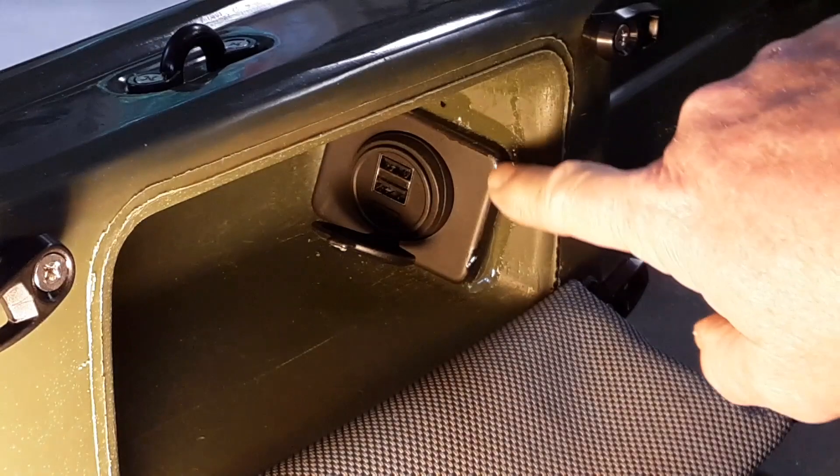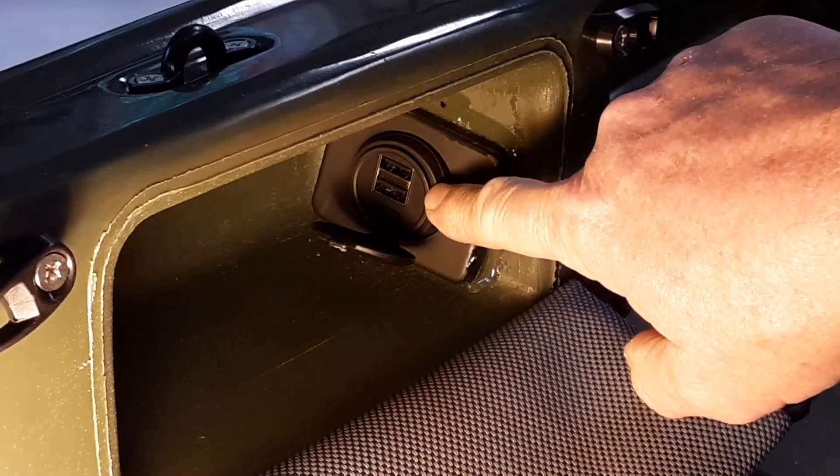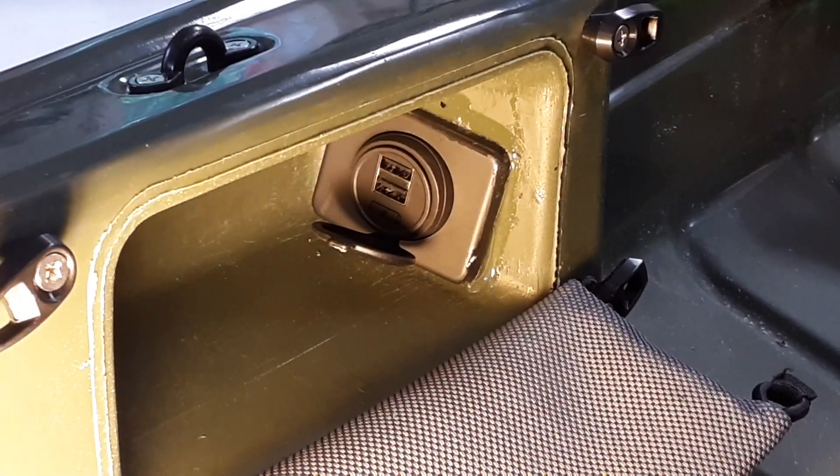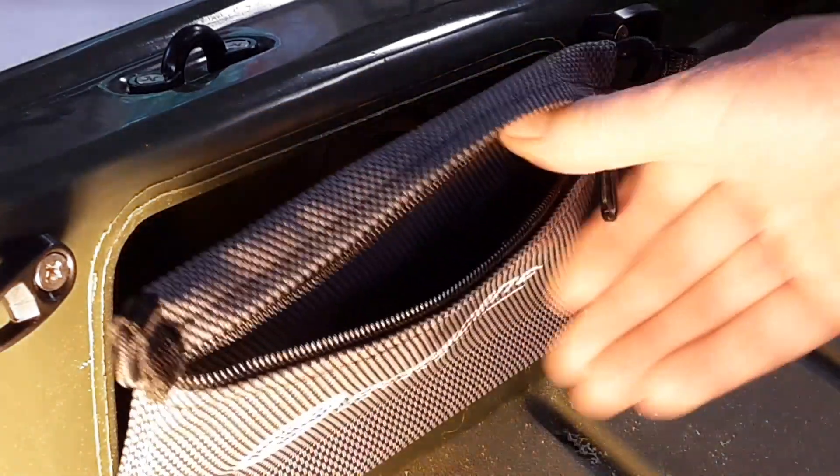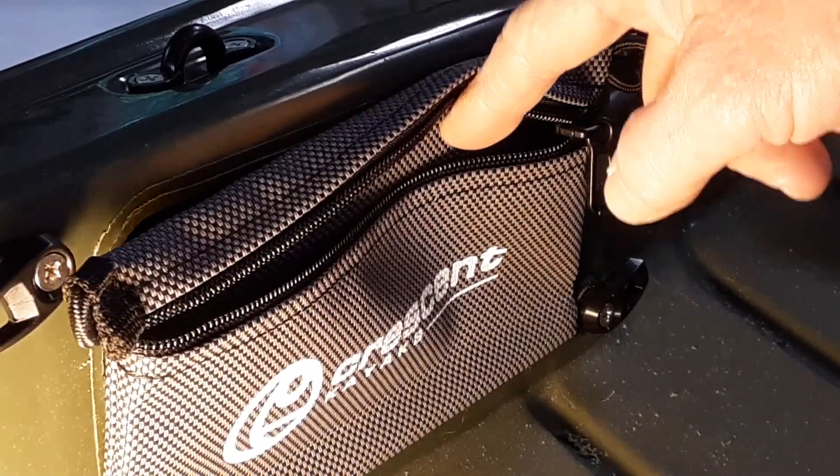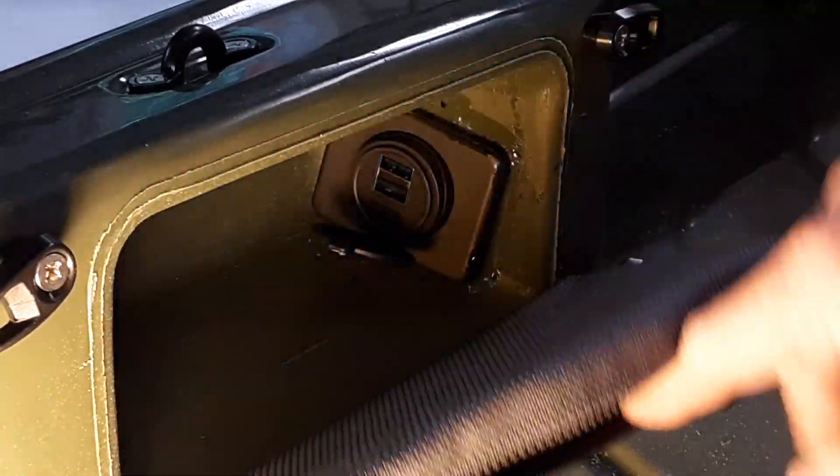This also only needed three small holes to be drilled: two for the plate and then one small one for the wiring to go through. Again, you don't have to cut a big diameter hole like you would normally do with other ports. And I have this set up so it hides in the recessed area behind my tool bag where I can keep my cell phone and then charge it up very easily.